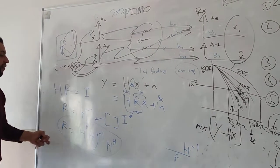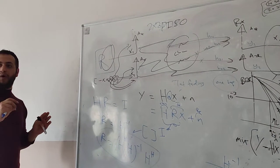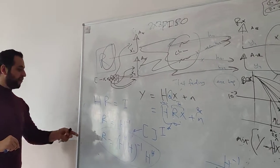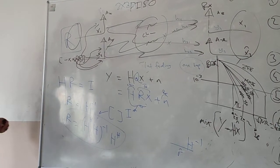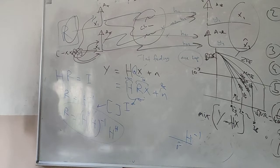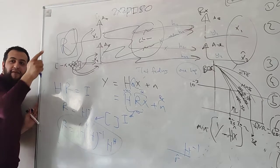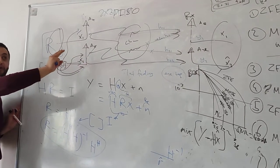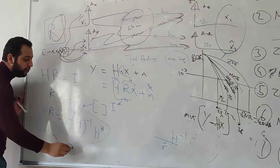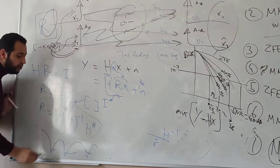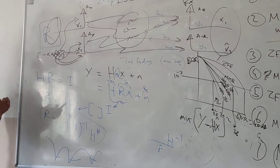We have these advantages, but does this advantage come without any side effects? When we put R like this, it has some side effects. When you want to pre-code by R, R is dependent on the channel. If you equalize at the receiver, you have the noise enhancement problem. And if you are in a deep fade, the same problem applies.